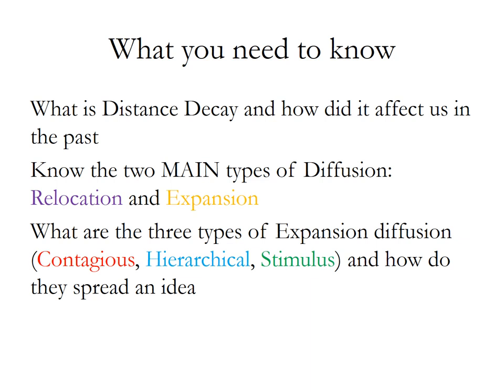So, what do you need to know today? Remember, we talked about distance decay or Tobler's Law, which is very easy. And you also have to know why we don't follow Tobler's Law anymore. Know your two main types of diffusion — relocation and expansion — and understand the three types of expansion diffusion: contagious, hierarchical, and stimulus, and how they spread. It would really help in your notes to draw the visual depictions of each type. If you have any questions, leave them in the comments, hit that like button and subscribe. This was another episode of Bear's Guide 205, and I'll see you next time.